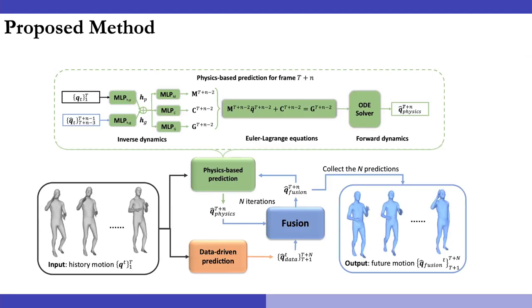For our proposed method, we introduce PhysMoP, which incorporates physics for human motion prediction. PhysMoP includes a physics-based prediction model that explicitly encodes Euler-Lagrange equations to predict human body motion. At the same time, it includes a data-driven model and a fusion model to guide the physics-based estimates.